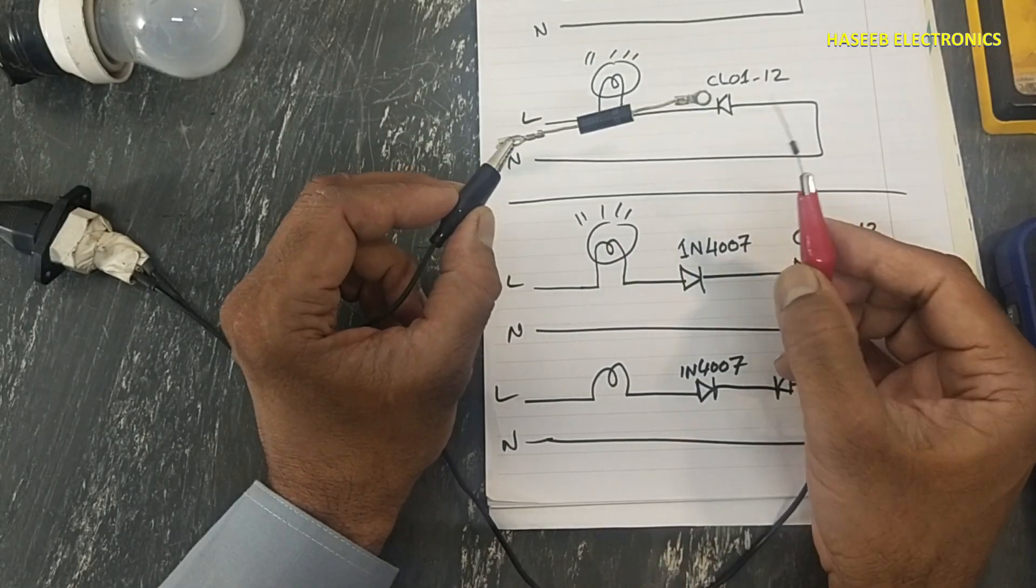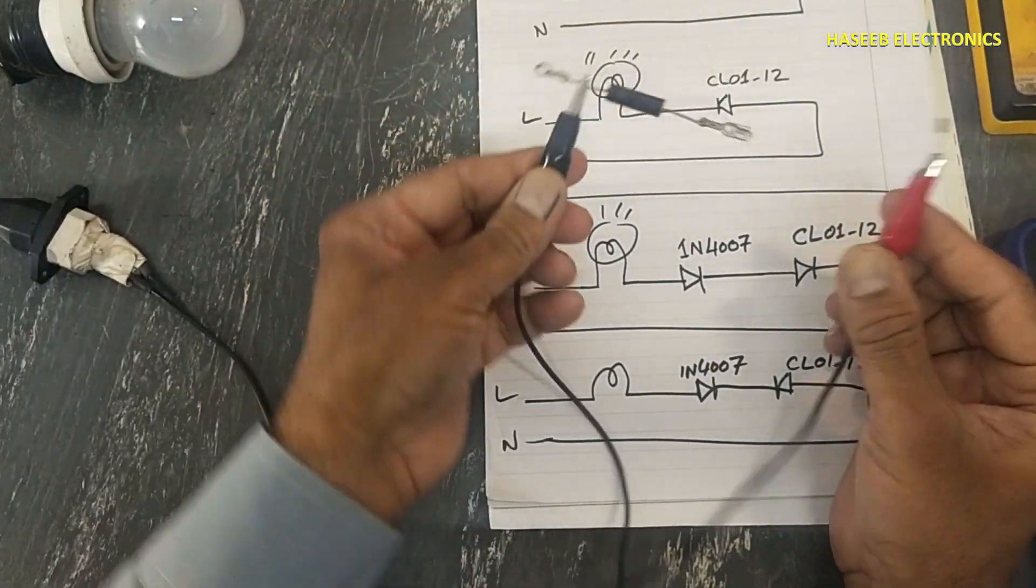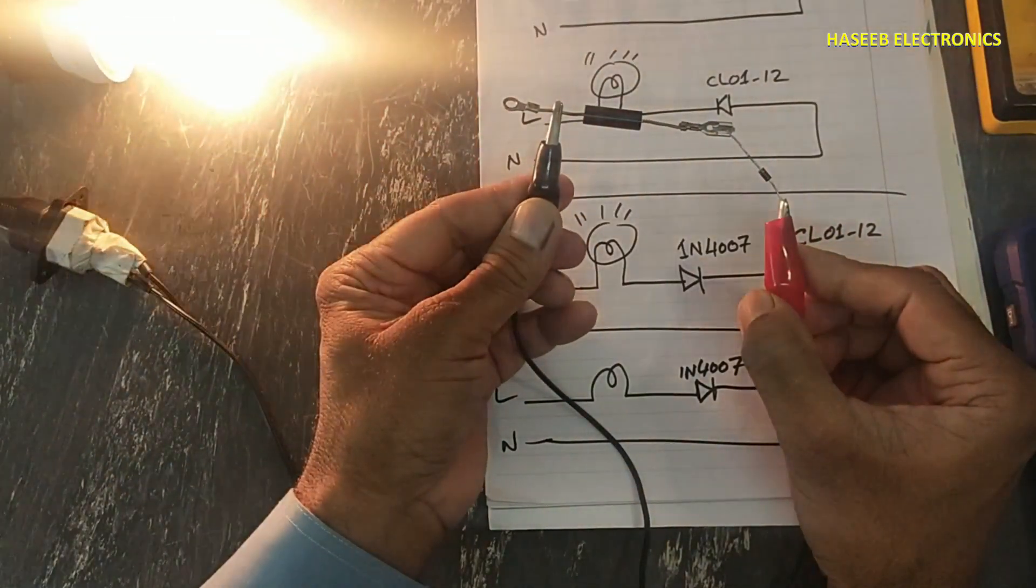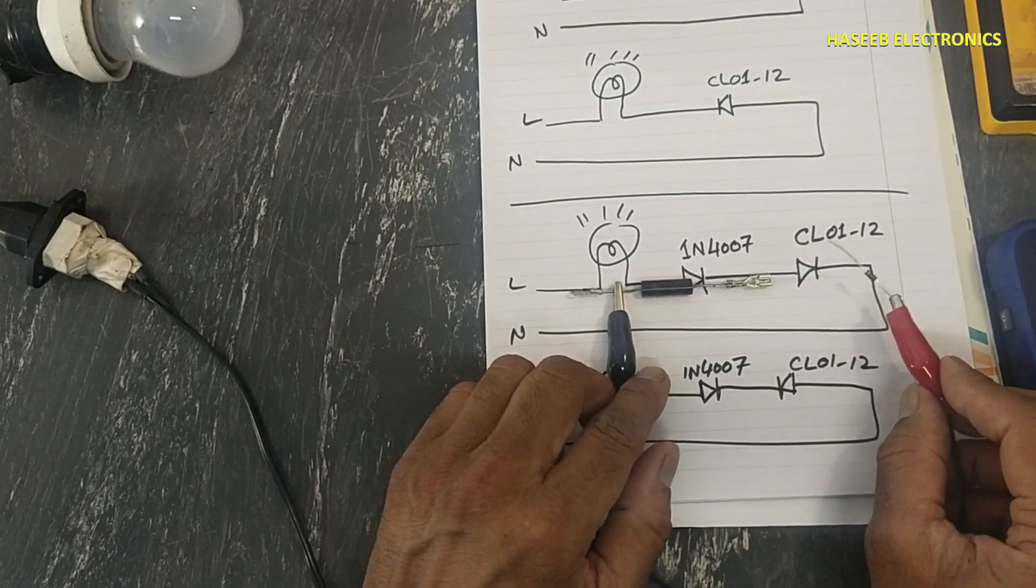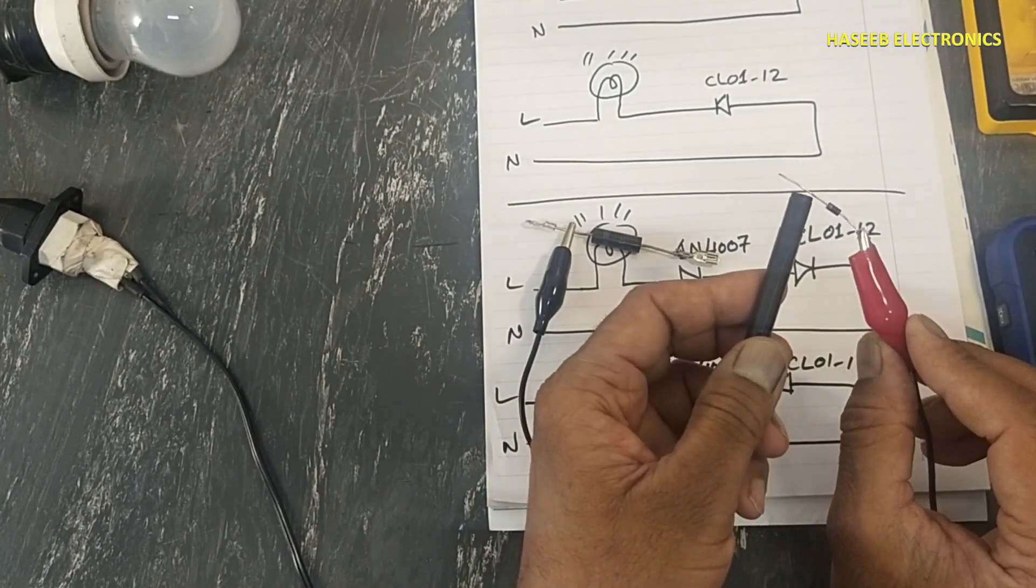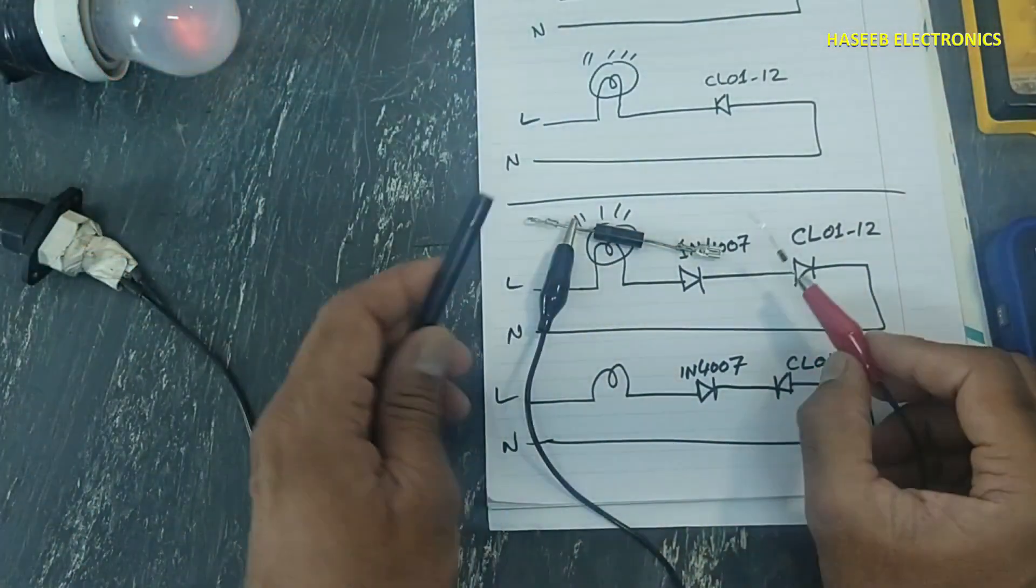This time the lamp is not turning on. Reverse the lead here. The lamp is turning on. When the lamp is turning on, at that time this cathode is connected to anode, the lamp is turning on.